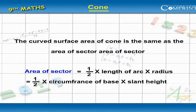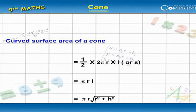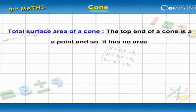Equal to 1 by 2 into circumference of base into slant height. Therefore, curved surface area of a cone equal to 1 by 2 into 2 pi r into l equal to pi r l equal to pi r root of r square plus h square.